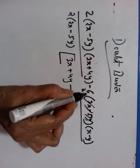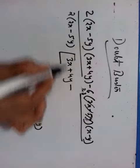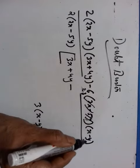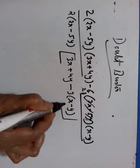So 2 and 3 are the factors of 6. 2 has gone out, so 3 is remaining. 2x minus 5y has gone out, so 3 into x minus y is remaining here. That's how I got this 3 into x minus y.